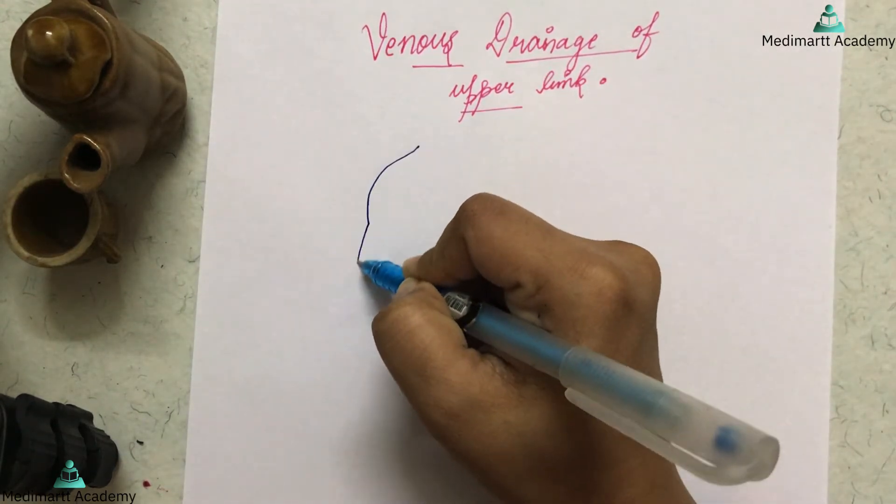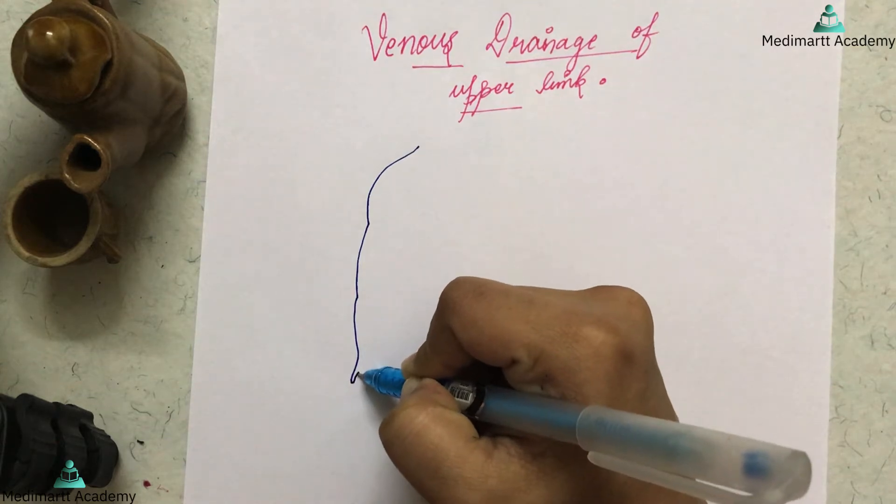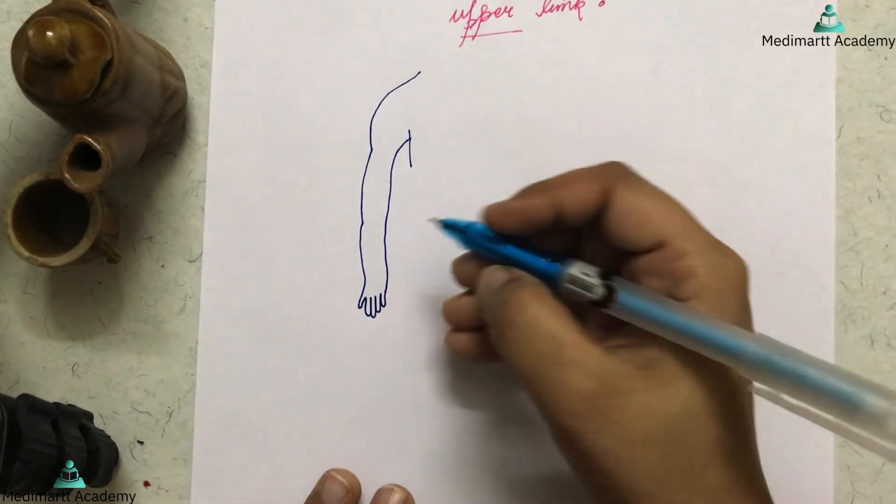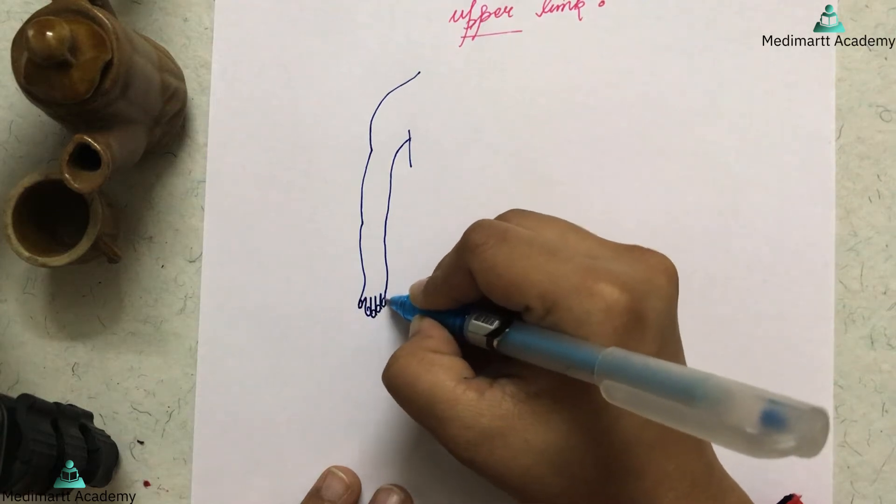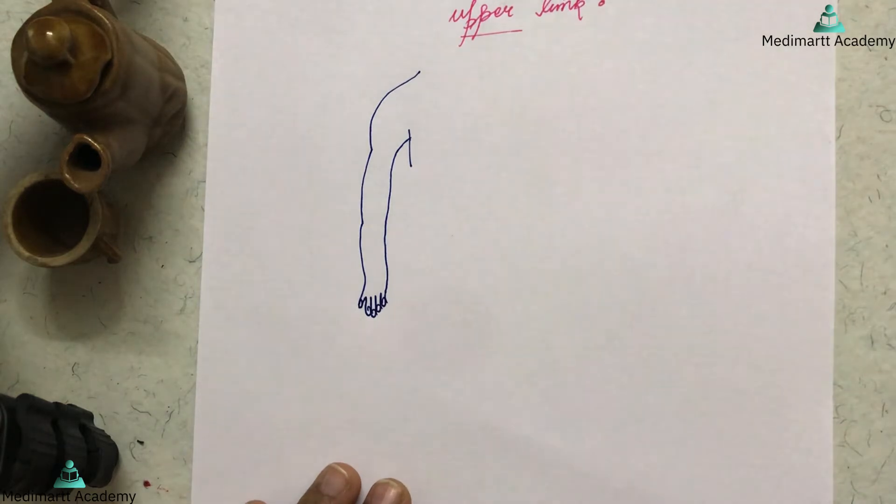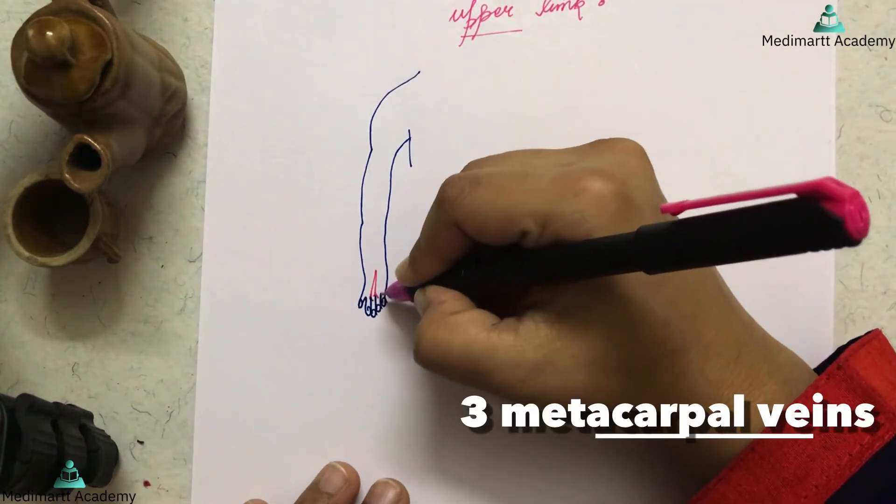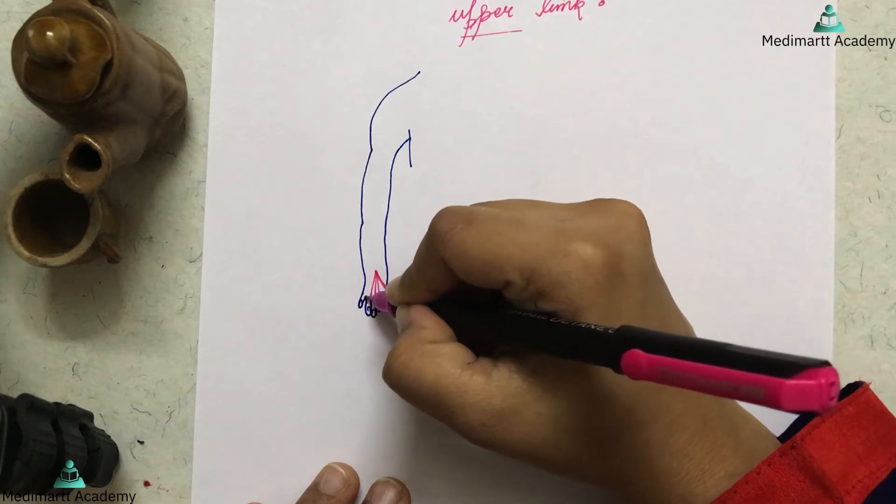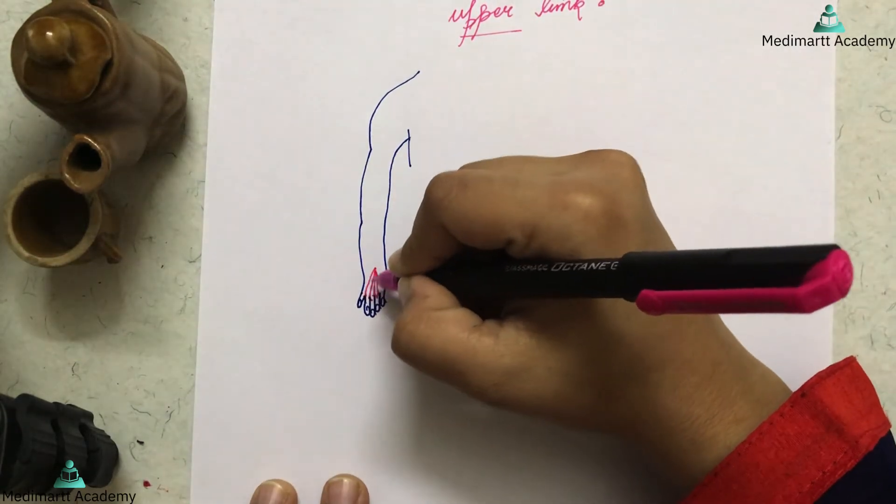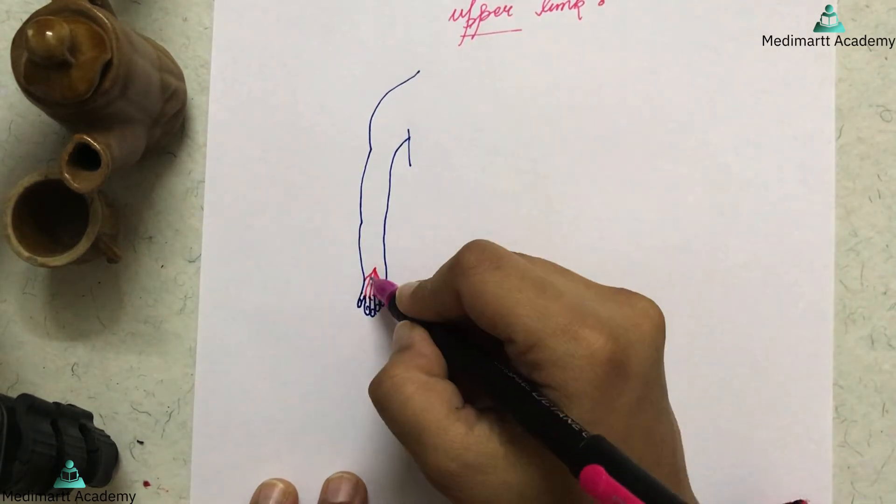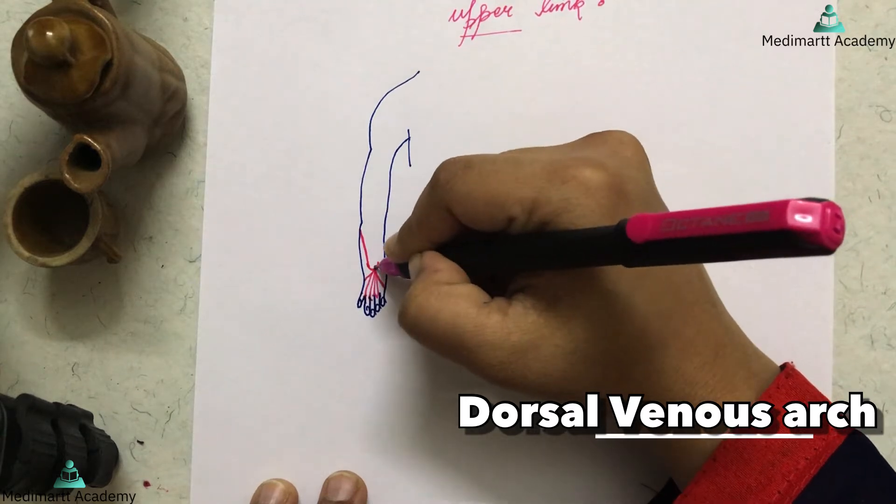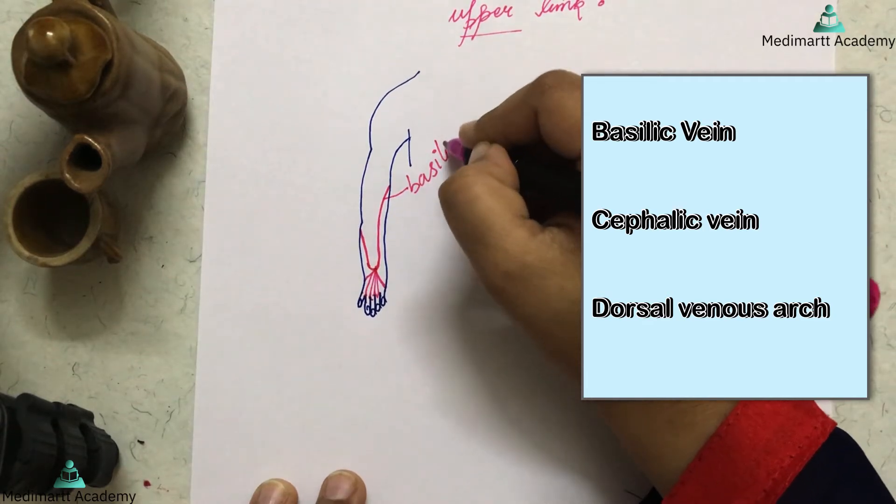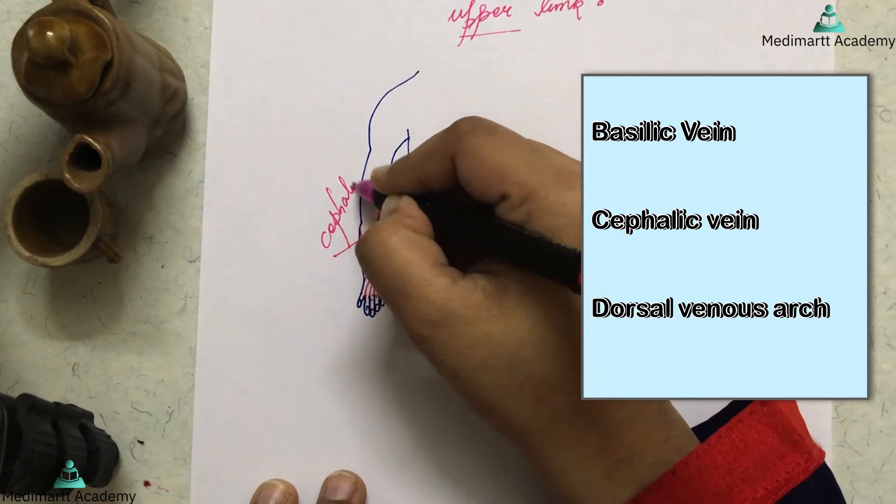First of all, we draw the dorsal venous arch. This is the back of the hand. I'm going to tell you about the dorsal venous arch. As I told you, three metacarpal veins: from the ring finger, one from the index finger, and two from the thumb. This is your dorsal venous arch. Here it will form one vein, and from here another vein.